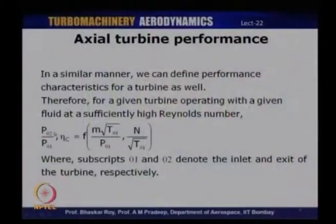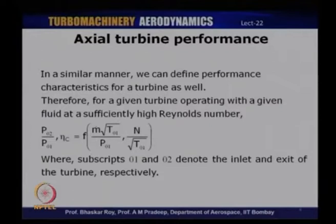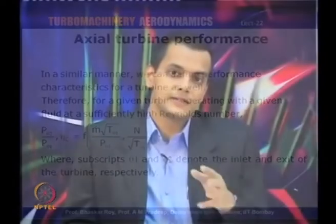We will use similar parameters for plotting the performance characteristics of axial turbines. In the case of turbines, the pressure ratio and efficiency are again functions of mass flow rate times stagnation temperature divided by stagnation pressure, and speed N divided by root T₀₁. We will use these parameters for characterizing axial flow turbine performance, looking at pressure ratio versus mass flow rate for varying non-dimensional speed, and subsequently the variation of efficiency.